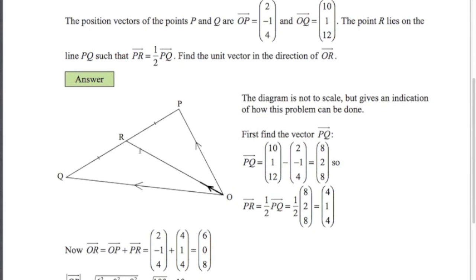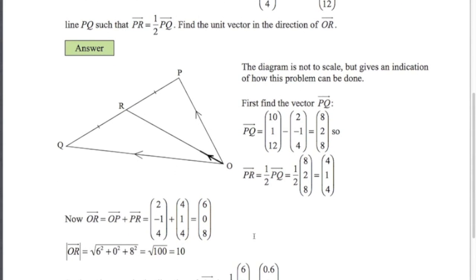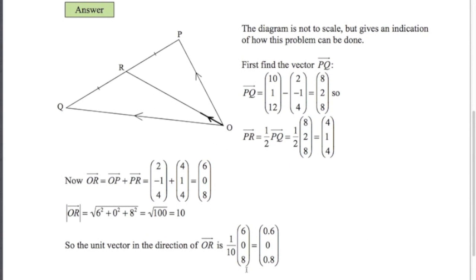We want the unit vector in that direction. So the length of o to r. 6 squared plus 0 squared plus 8 squared. Root 100 is 10. So the unit vector in that direction is 1 tenth of 6, 0, 8. Which is 0.6, 0, and 0.8. Or if you want to write it out in terms of i, j and k, it'll be 0.6 i plus 0.8 k.